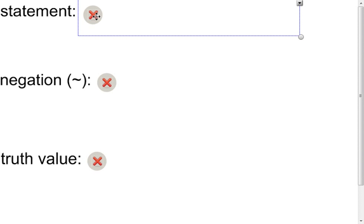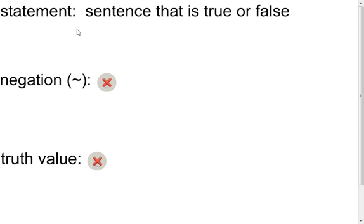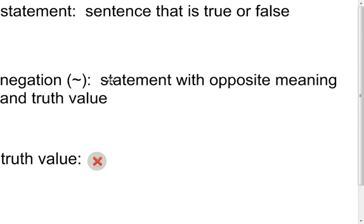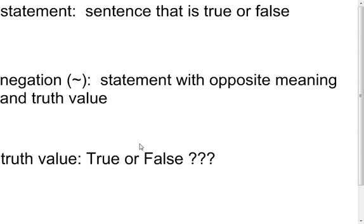Our first one is just going to be a simple statement. A statement is nothing more than a sentence that could be either true or false. Negation — notice the symbol — this is the little symbol that we use to negate something. What that means is just to say the opposite meaning in truth value. If one statement was true and we negate it, it's going to be false. Then the truth value — that's nothing more than whether the statement is true or false. Sometimes I'm going to ask you to give me the truth value of a statement; all I'm really asking is whether the statement is true or false.